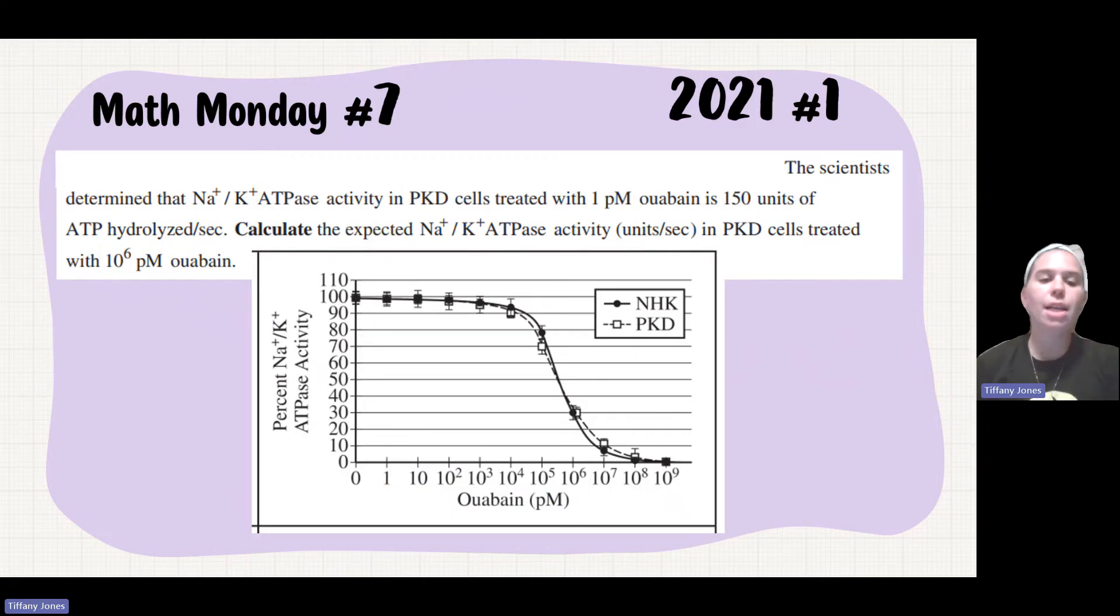So they tell you the scientists determined that the sodium potassium ATPase activity in the PKD cells treated with 1 picomole of the drug is 150 units of ATP hydrolyzed per second.